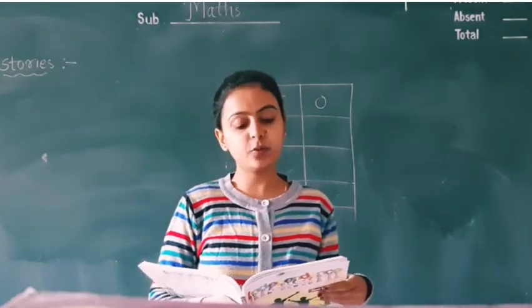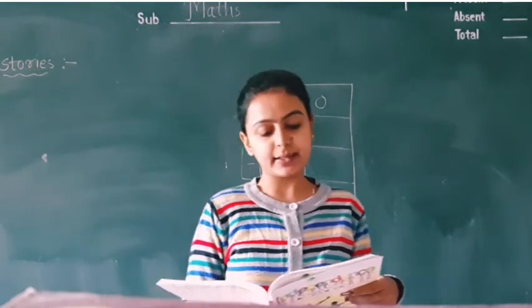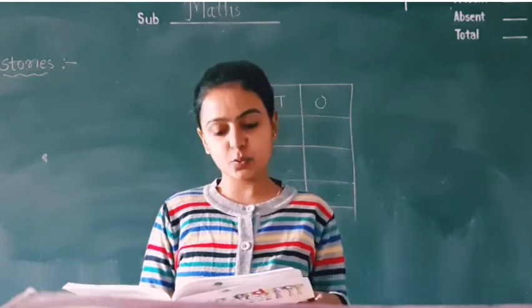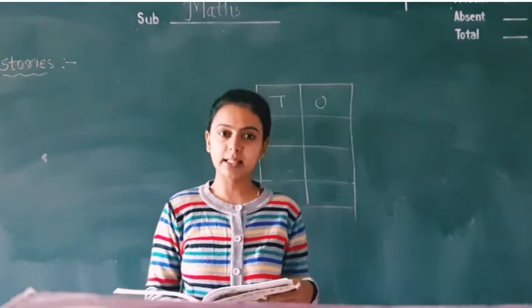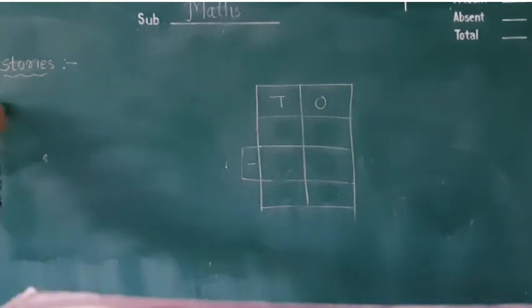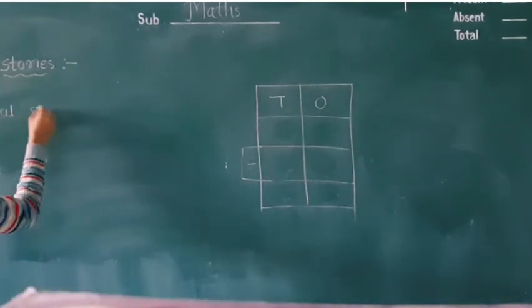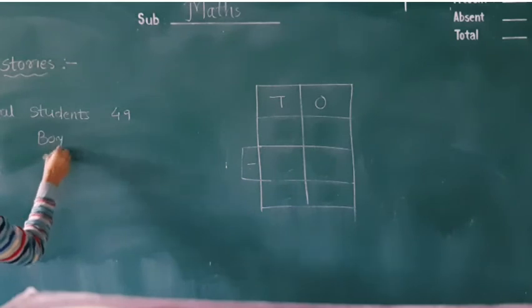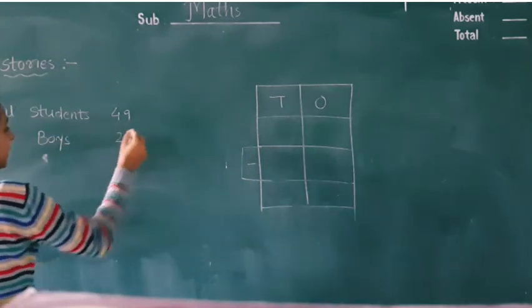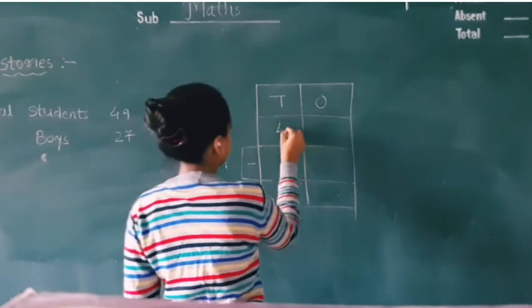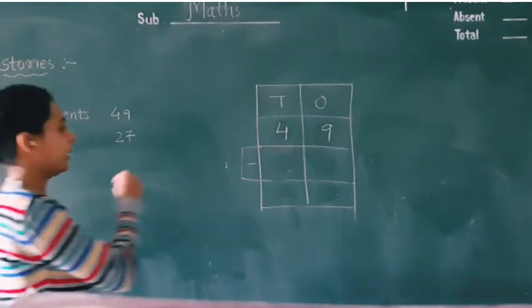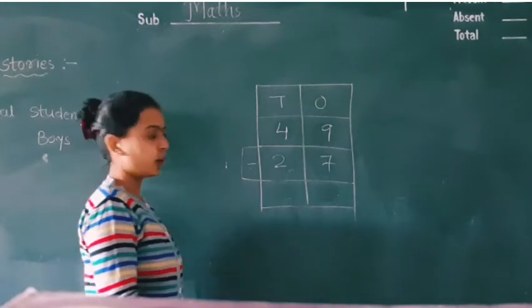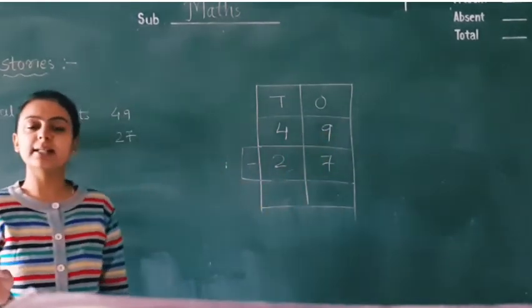In a class there are 49 students. Out of them, 27 are boys. How many girls are there? Total students 49, boys 27. So girls kitni? 49 will be the total students in the class, and 27 are boys present in the class. So how many girls are in the class? Let's find out. First, subtract ones.